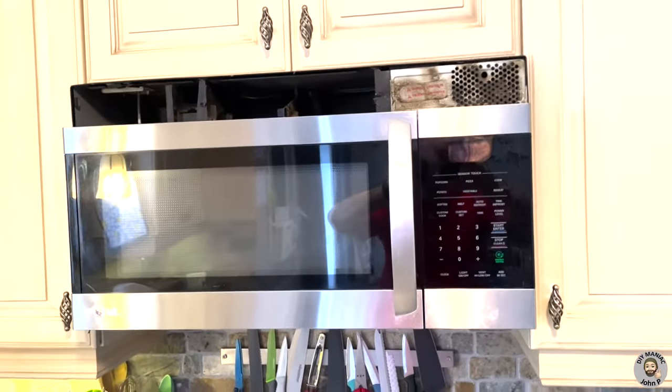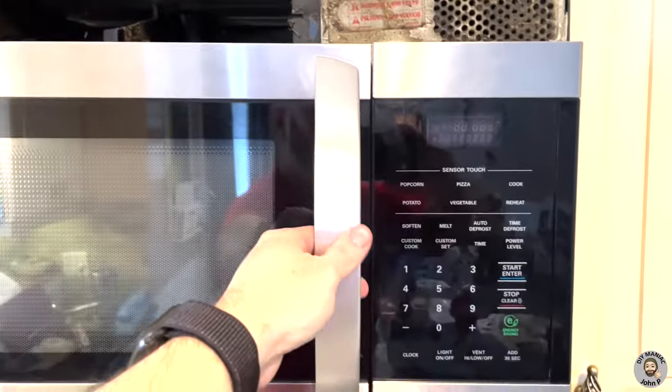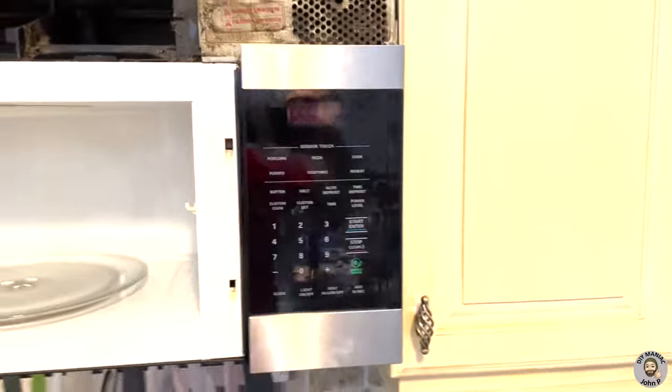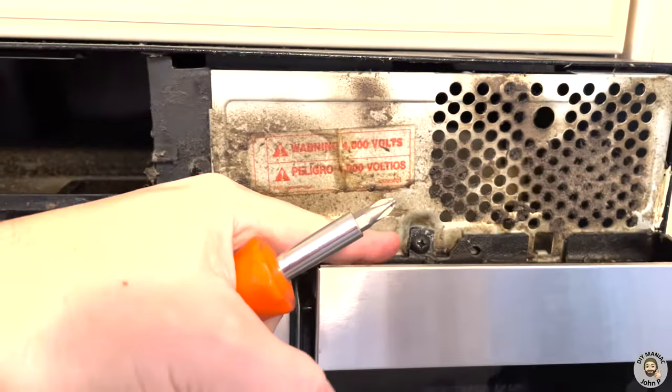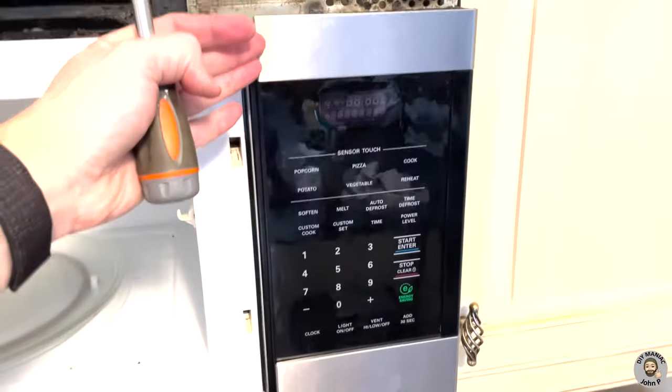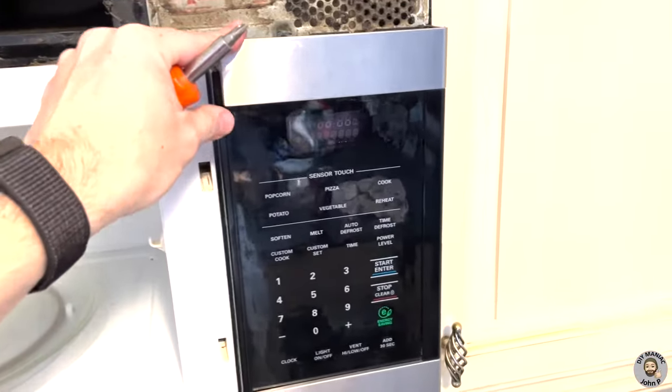With that top trim removed, open the microwave door. If we look on top of the control panel that we're going to need to remove, there's going to be one Phillips screw located right here. Once you remove that, this control panel is going to be wanting to tilt forward, so hold on to it.